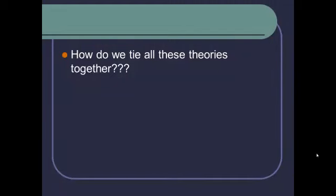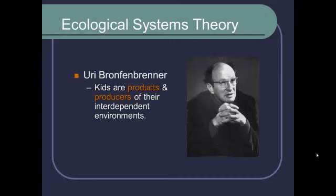You might be wondering, isn't there a way that we can tie all of these theories together? There is one theory that does a pretty good job of that — it's called ecological systems theory. It was proposed by Uri Bronfenbrenner. His main thesis was that children or people are products of and producers of their environments, and that these environments are interdependent. We are influenced by our environment and our genetics, but we also help to create our environment and shape our genetics. It's a cycle where our environments and genetics impact the kind of people we are, and then the kind of people we become impacts our environments and genetics — everything is interconnected.